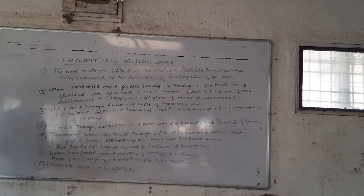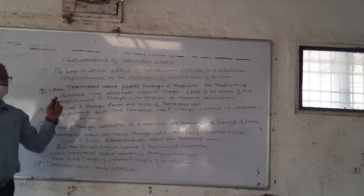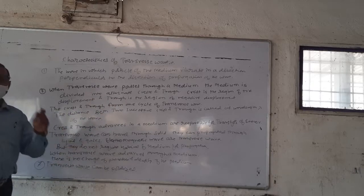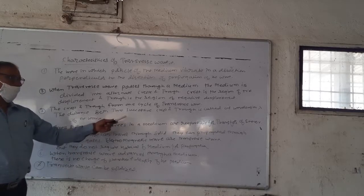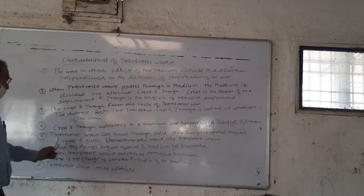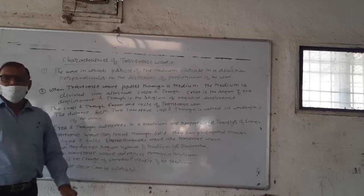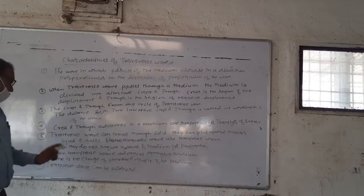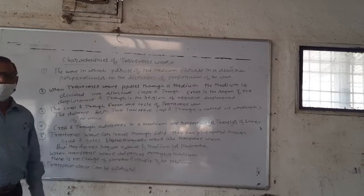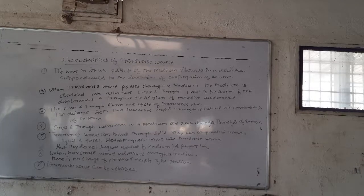These are the seven important characteristics of transverse waves: first, definition; second, the medium is divided into alternate crests and troughs; crest is the region of positive displacement and trough is the region of negative displacement; third, crest and trough form one cycle and the distance between two successive crests and troughs is the wavelength lambda; fourth, crests and troughs advance in the medium and are responsible for transfer of energy; fifth, transverse waves travel through solids but not liquids and gases; sixth, electromagnetic waves are transverse but do not require a material medium; seventh, no change in pressure and density; and last, transverse waves can be polarized.